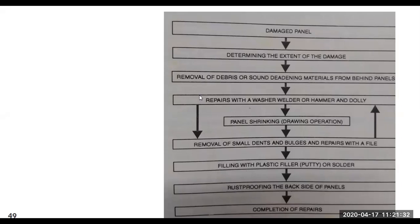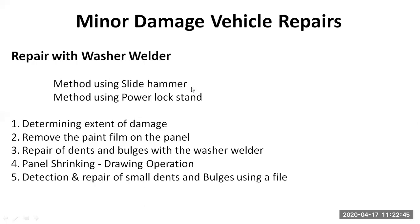This is the process for a vehicle exposed to minor damage. Minor vehicle damage repairs can be done using washer welders — either the method with a slide hammer or the method with a power lock stand. The steps involved include: determining the extent of damage, removing the paint film on the panel, repairing dents and bulges using a washer welder, then panel shrinking, and finally detecting and repairing small dents either by using a file or adding material.